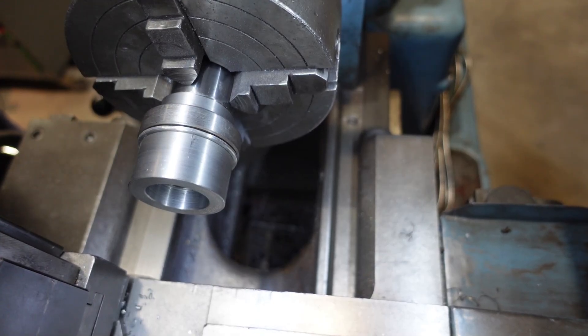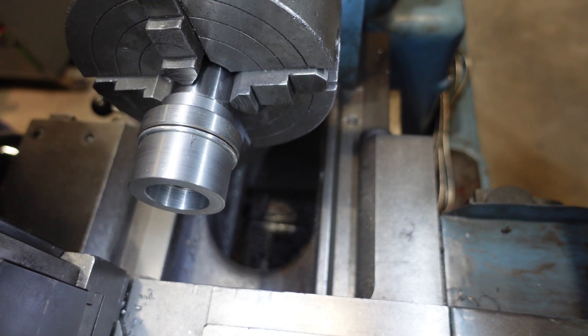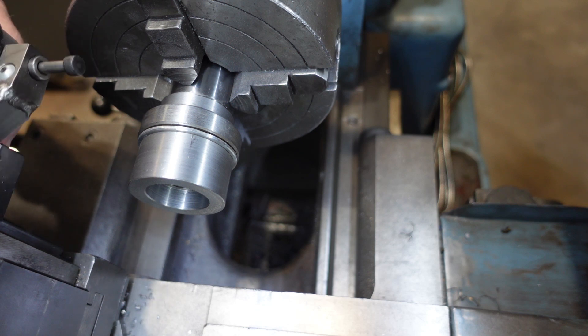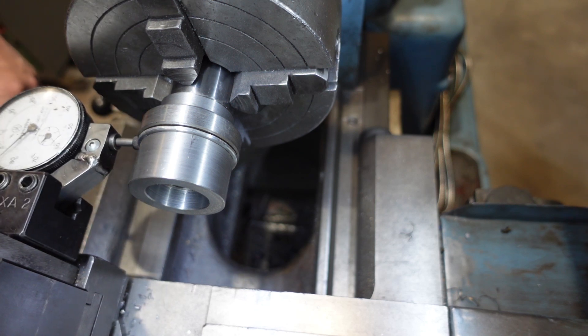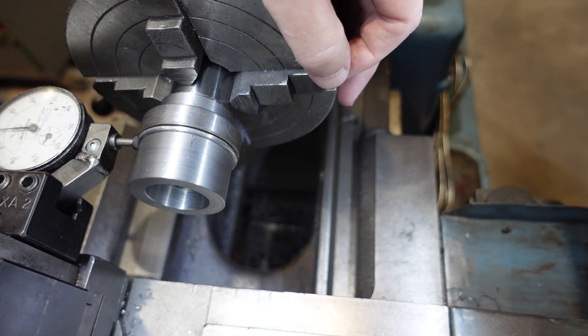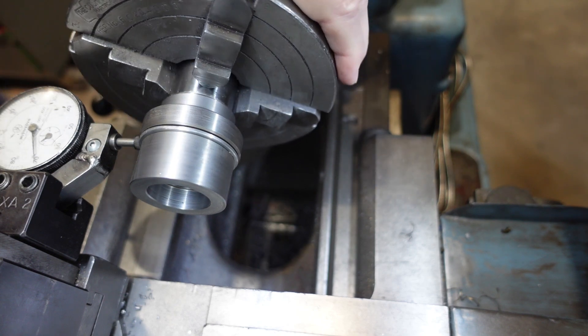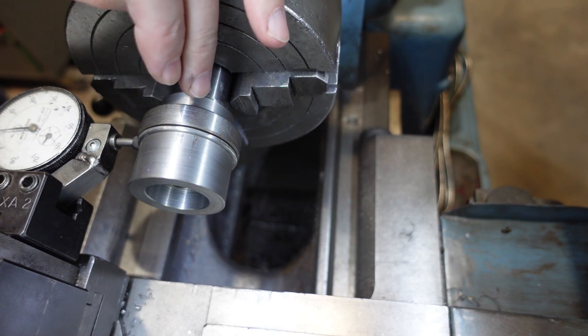In my previous video I may not have explained terribly well what I'm trying to do here. Currently I use this to centre up stock in a four jaw, and as you can see when I first put something in, this one's not too bad but I've got around about 30 thou worth of eccentricity there.